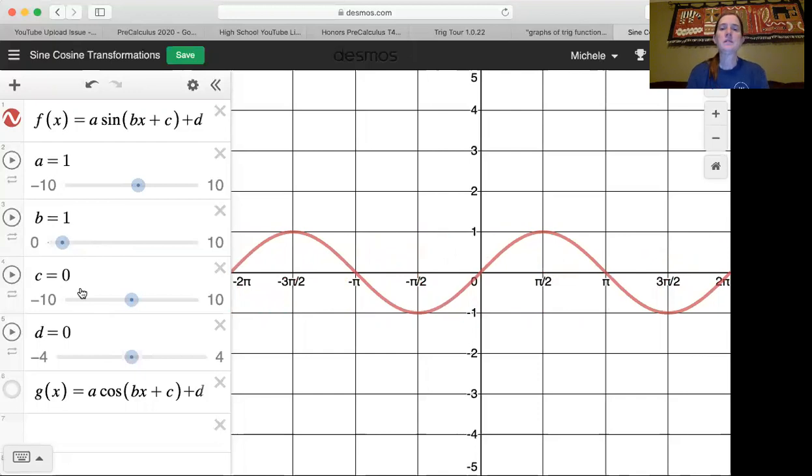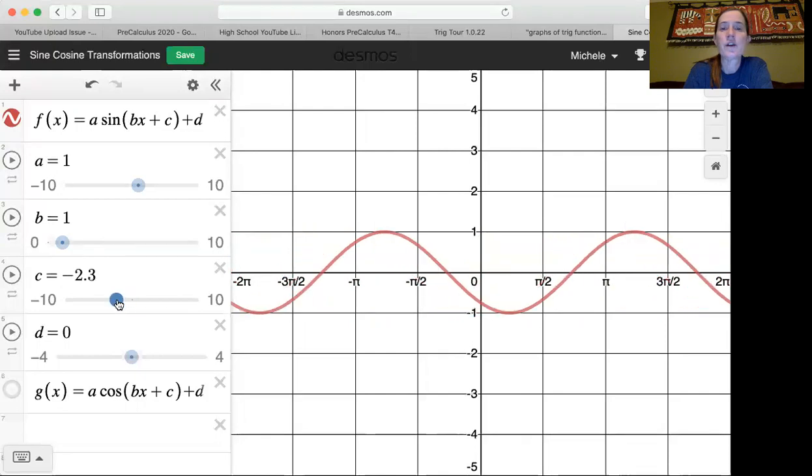And then c, I'm gonna put this back at one. c is part of phase shift. Phase shift is really negative c over b. But right now if b is one, we can just think of phase shift as the opposite of c over one. And of course, if c is positive, then the graph is going to shift to the left. And if c is negative, the graph shifts to the right. Get back at zero.